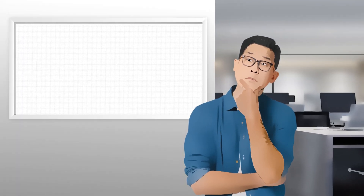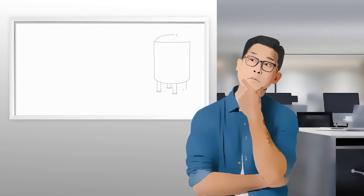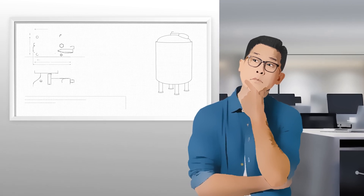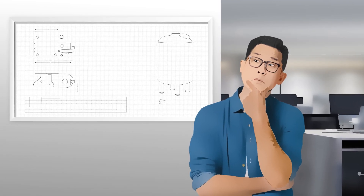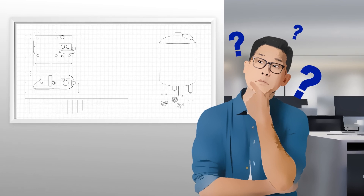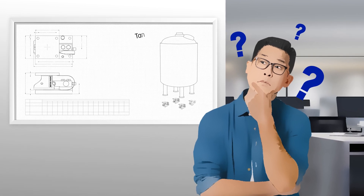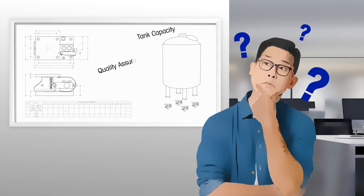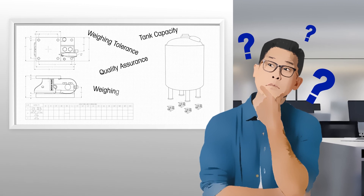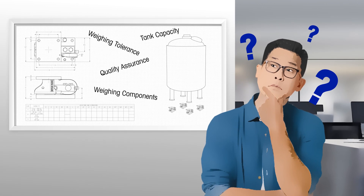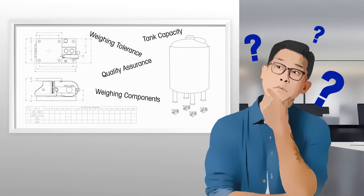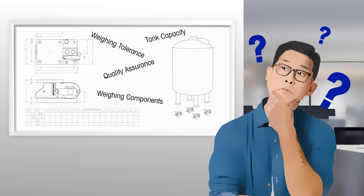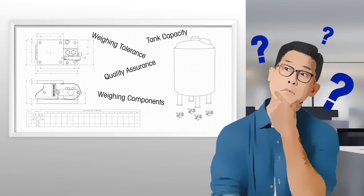Have you ever experienced this situation? Imagine you are planning a production expansion for a battery slurry manufacturer, and you must design several tank scales. Do you know how to select the right weighing components? What are the criteria for choosing suitable weighing components? How do you avoid making the wrong selection and needing costly replacements? Will this knowledge help you with planning and budget constraints?